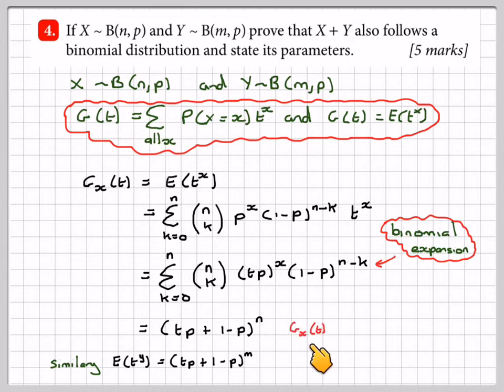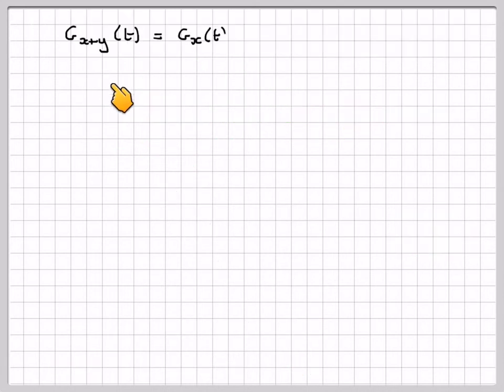This is G_x of t, and this is G_y of t. So G of X plus Y of t is G_x of t times G_y of t.